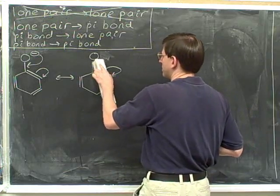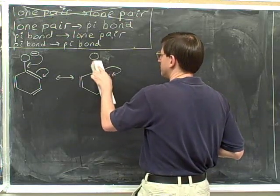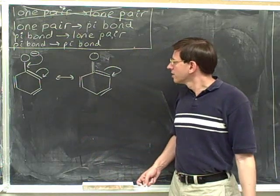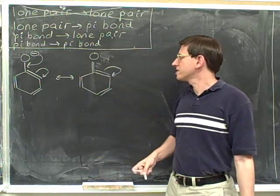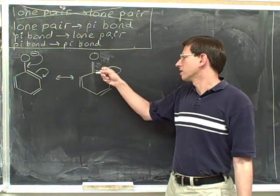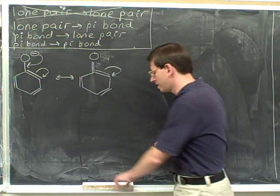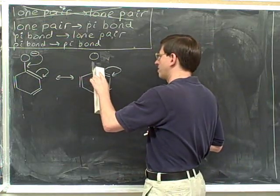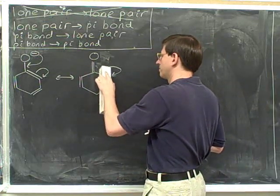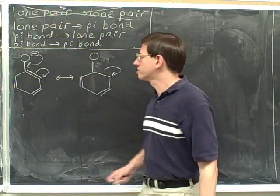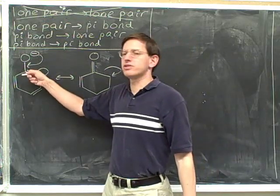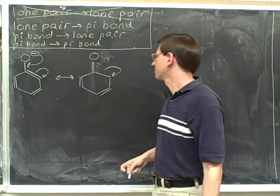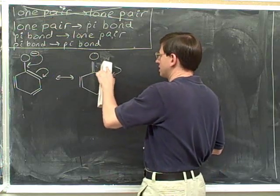I'm ready to erase the head of this arrow. The next thing to look at is the tail of this arrow. It looks like the tail is in the middle of the pi bond, so the electrons are coming from the pi bond. So we erase the pi bond. But we're still in the middle of this string of arrows, so there's no need to change any charges. We can erase the tail here.